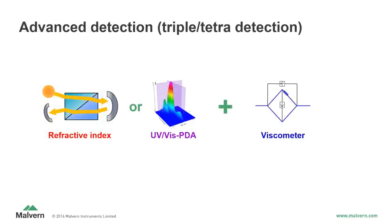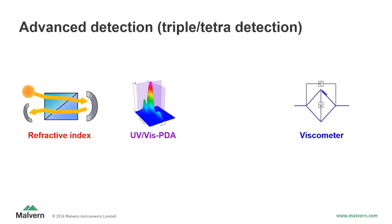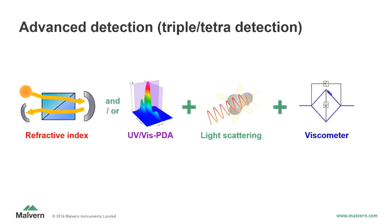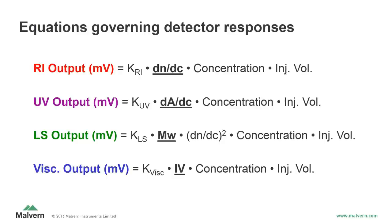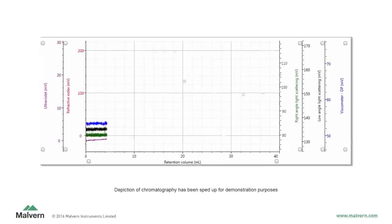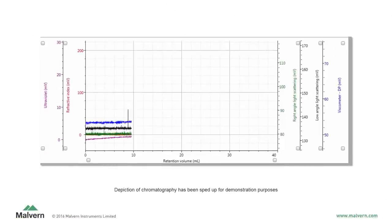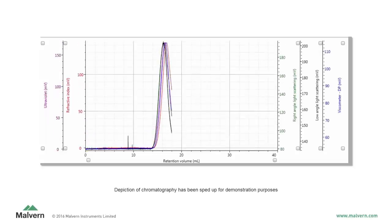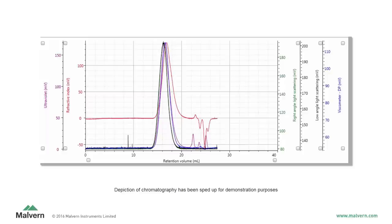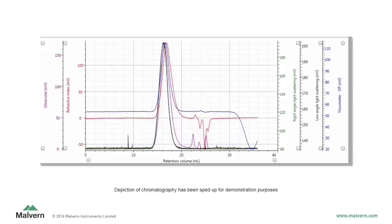Advanced detection, also known as triple or tetra detection, introduces a light scattering detector to the array, providing complete characterization of GPC samples. Each detector responds to a unique combination of factors and tells us about one different aspect of the sample. The refractive index detector provides sample concentration information. The UV-Vis or photodiode array detector allows sample concentration and absorption information to be obtained. The light scattering detector offers a direct measurement of the sample's molecular weight, independent of a column calibration curve. And the viscometer detector measures a sample's viscosity in solution, which is used to calculate intrinsic viscosity and hydrodynamic radius. All detectors operate simultaneously, providing a wealth of data from a single injection.